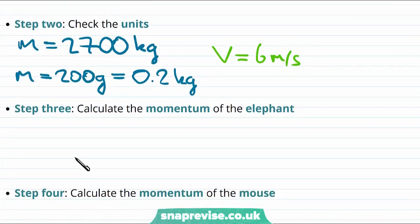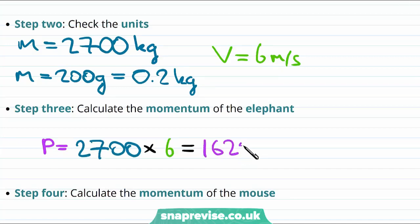The momentum will be equal to the mass multiplied by its velocity, which gives us a momentum of 16,200, and then the units are kilogram meters per second.